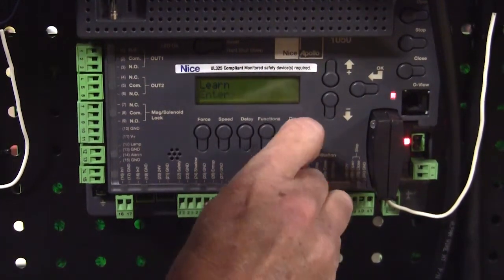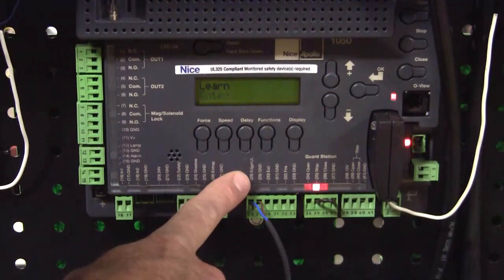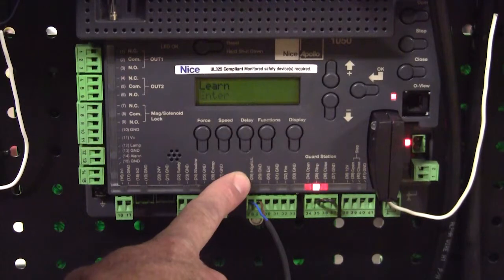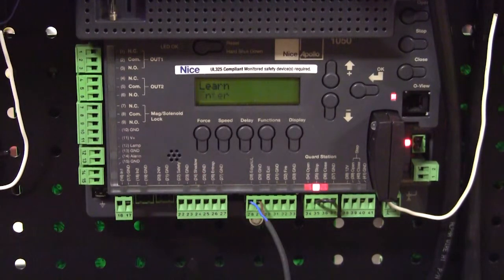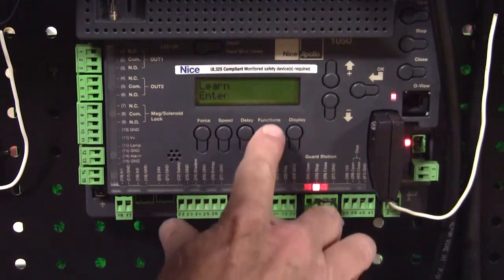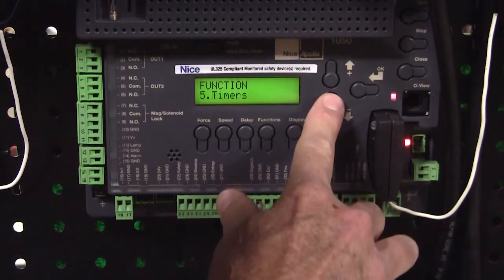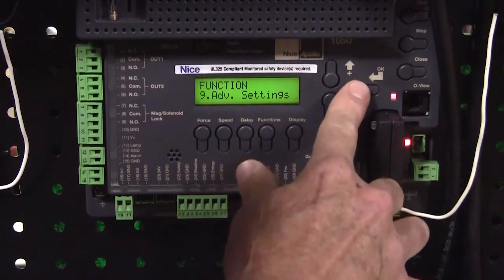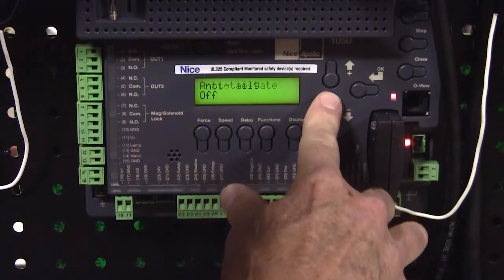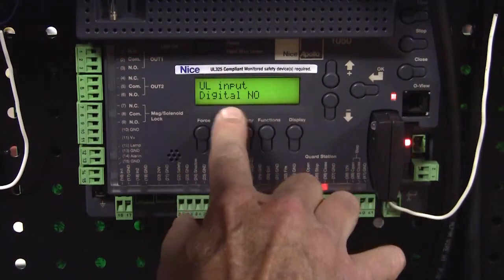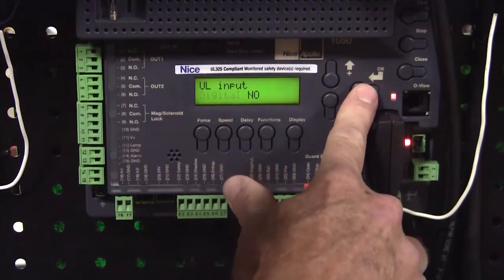Now the UL edge input is defaulted as a digital normally open input. That means it's looking for just a dry contact. So to change this input to a monitored entrapment input we have to go into functions, go down to advanced settings, and let's go down to UL input digital normally open. To change that we press ok.